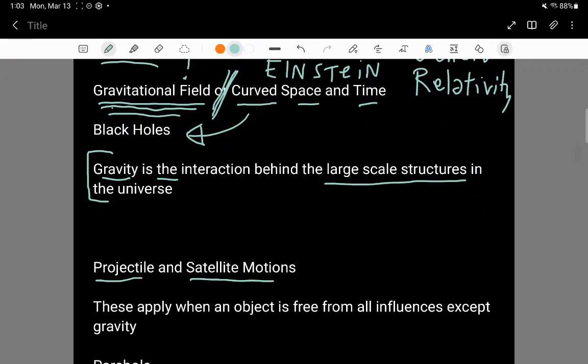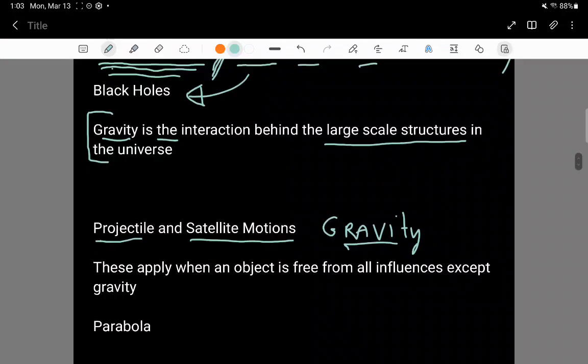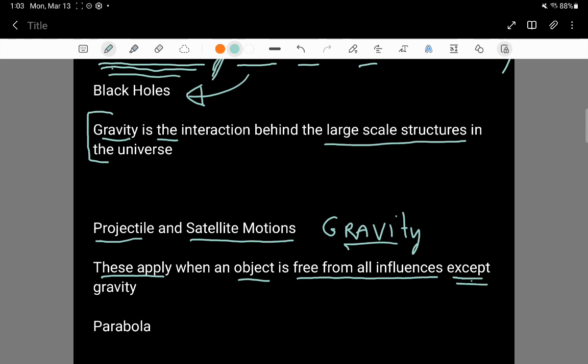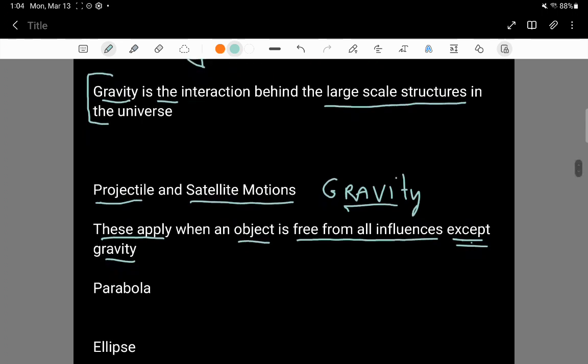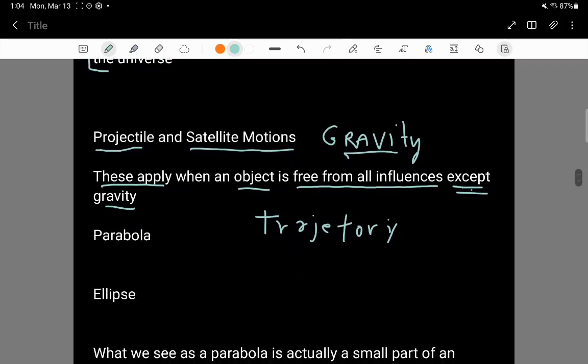Projectiles and satellite motion is another topic that you're studying and this is motion that is because of gravity. The idea is projectile motion and satellite motion, these apply when an object is free from all influences except gravity and these motions give rise to trajectories where a trajectory is the path that an object takes. A projectile can take a parabola. This is the path of a ball. If you throw it up in the air it goes up and then comes back down and the parabola is an interesting shape.